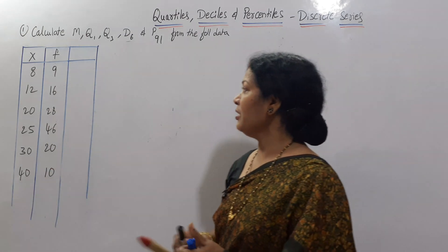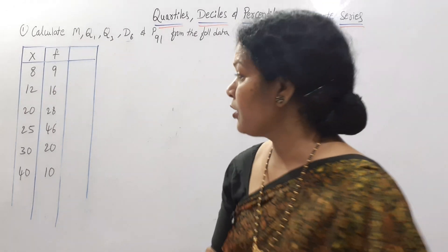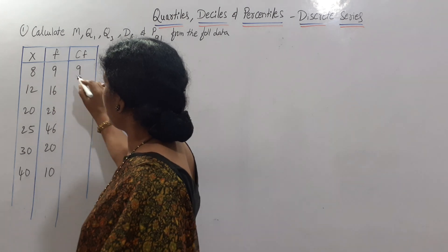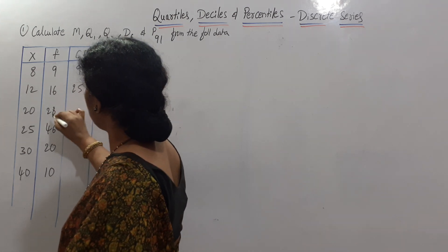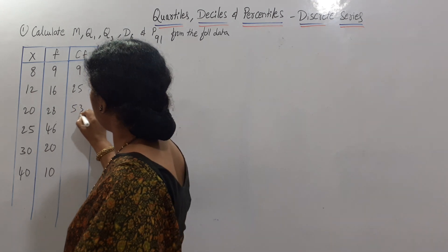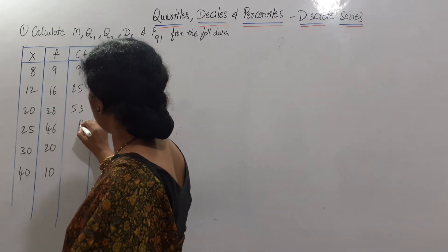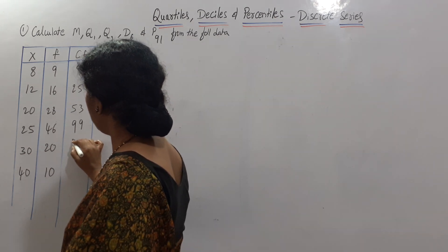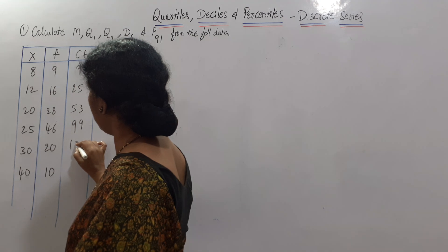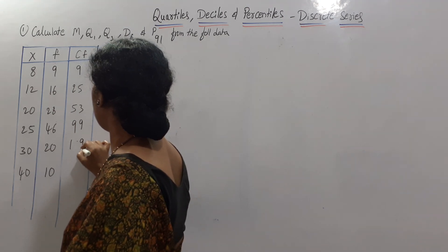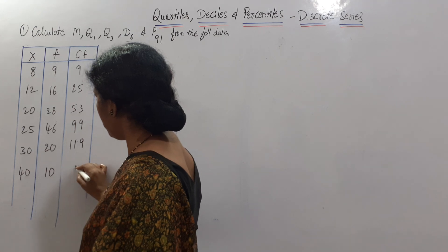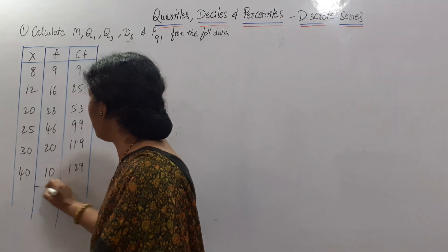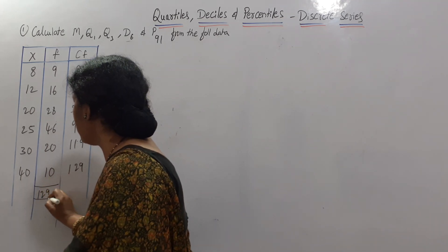Computing cumulative frequency: the first value is 9, then 9+16=25, 25+28=53, 53+46=99, 99+20=119, 119+10=129. So CF reaches 129, which matches the total frequency. N = 129.